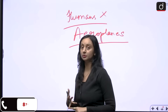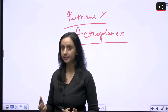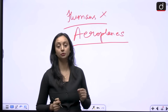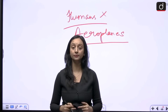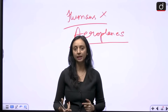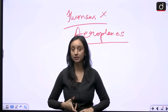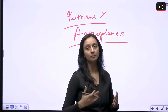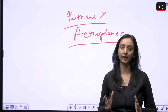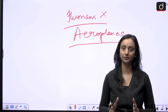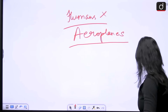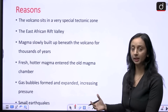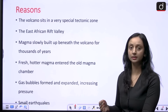Before we proceed to understand the possible reasons behind this eruption, as homework I want you to look at the different types of volcanoes — based on their frequency of eruption and based on their nature of eruption. Please go and revise the volcanoes. Now let us look at the possible reasons behind the eruption. There are many reasons; we will discuss a few of them.